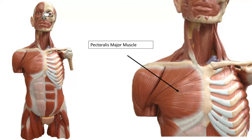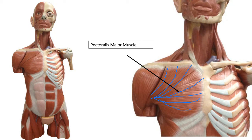Moving to the chest, we've got the pectoralis muscle — two of them, pectoralis major and pectoralis minor, but for our class you don't need to know pectoralis minor. Pectoralis major is the muscle that gives you that defined chest. This is an example of the convergent muscle fascicle organization — all muscle fibers coming from different directions but converging onto a single tendon.